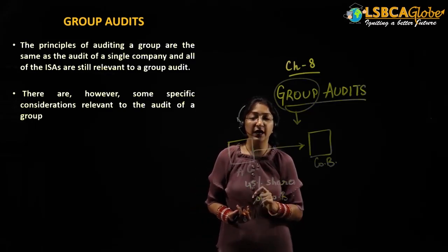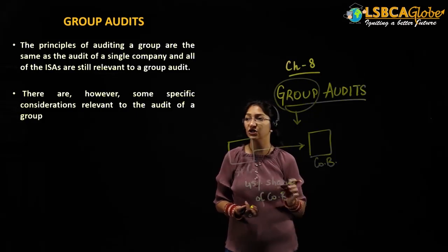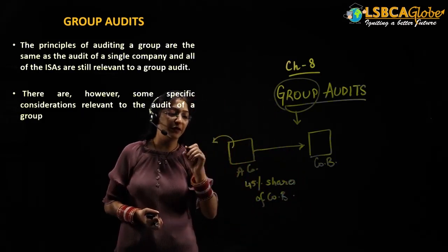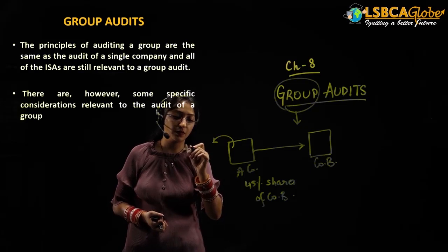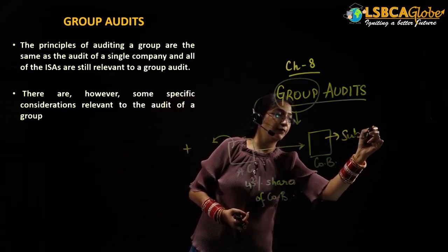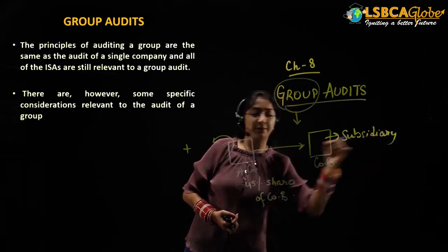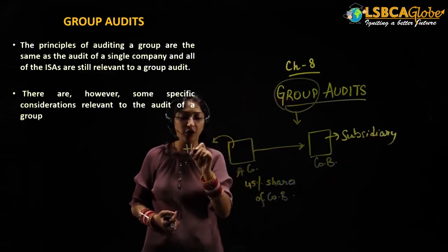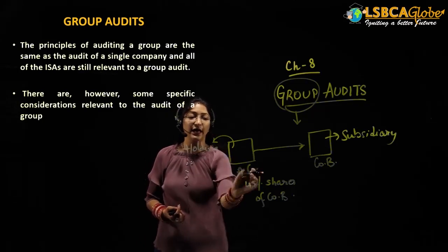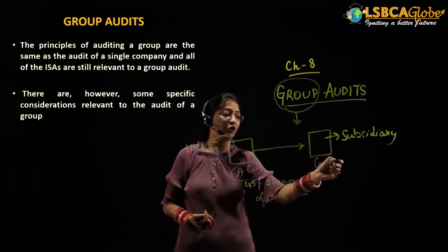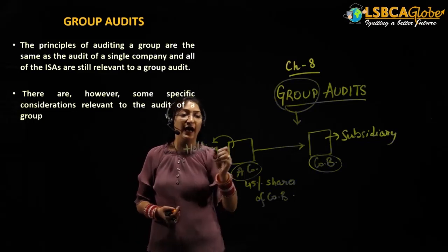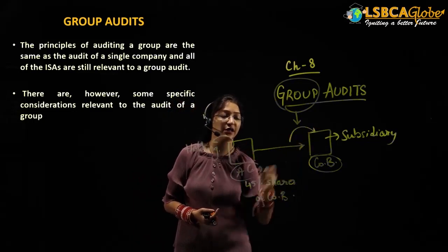Now if Company A is holding 45% shares of Company B, then Company B would be termed as the subsidiary and Company A would be called the holding company. This means Company A is the holding company of Company B — they have a holding-subsidiary relationship.